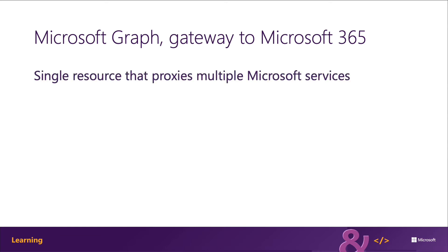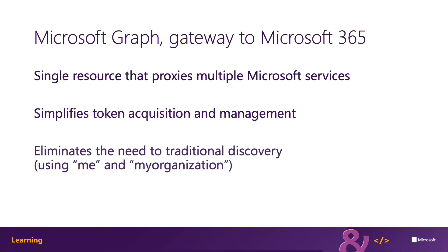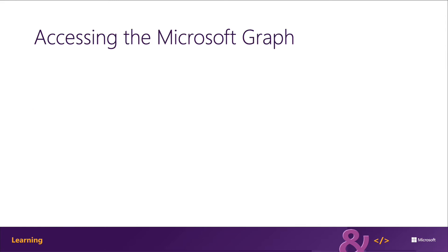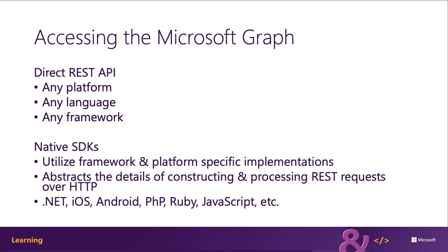Microsoft Graph is a single resource that proxies multiple Microsoft services, and it simplifies token acquisition and management. Instead of having to go to Azure AD to obtain an access token for each of the different endpoints for different Microsoft services, you can just go to Microsoft Graph and let it handle all of that for you. It also eliminates the need for traditional discovery using the me endpoint and the my organization endpoint just to get to your relevant information, and it allows for easy traversal of objects and relationships — being able to jump between a user, their calendar events, the documents they're working on, and other users also working on that document, instead of having to go to multiple endpoints. There are a couple of different ways to access Microsoft Graph: direct REST API interaction using any platform, any language, and any framework, or one of the various native SDKs made available by the Microsoft Graph team, which abstracts the details of constructing and processing REST requests over HTTP.